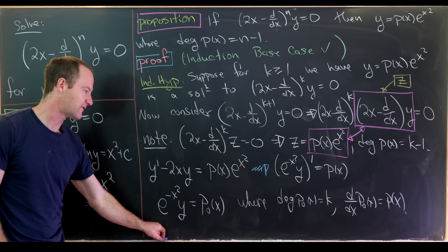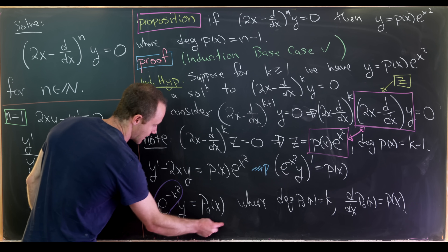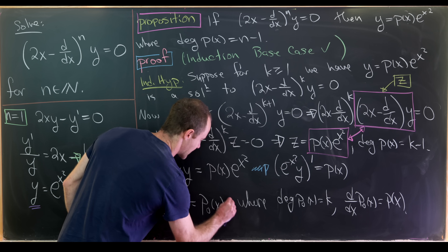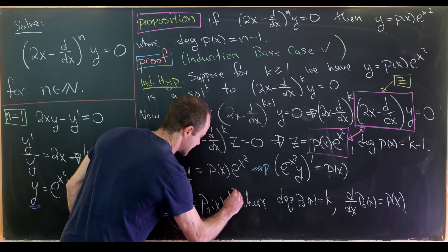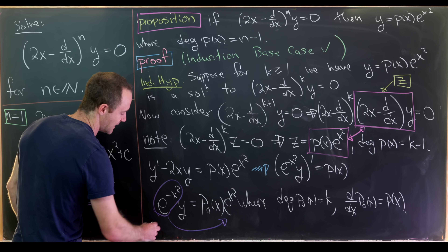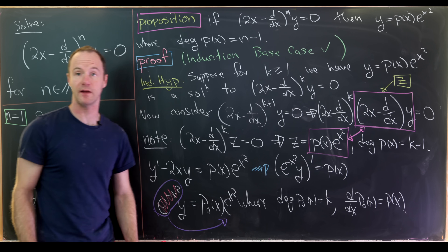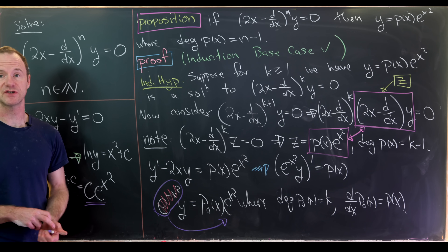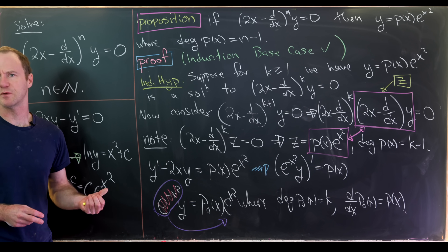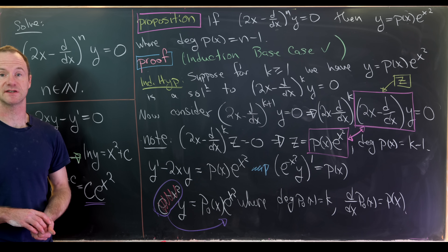Finally, multiplying by e to the x squared gives y equals p₀(x) e to the x squared, which has the prescribed form. That completes the proof. For other interesting differential equations videos, check out the one on screen now — and that's a good place to stop.